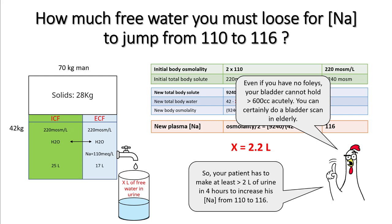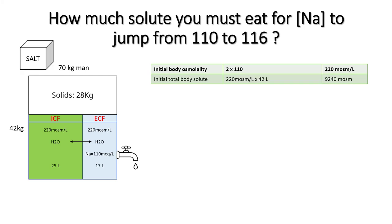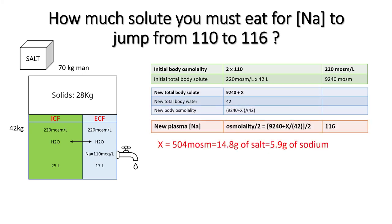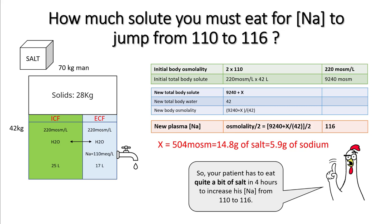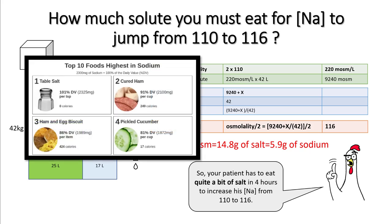Your patient would need to have made more than two liters of urine in four hours for sodium to increase by such a large degree. Even if your patient does not have a Foley, the bladder cannot hold more than 600 cc acutely. However, in elderly patients, make sure you do a bladder scan to rule out retention. For the solute part, you need around 504 milliosmoles to increase sodium from 110 to 116, which is equivalent to 5.9 grams of sodium — so the patient has to eat quite a bit of salt in four hours.